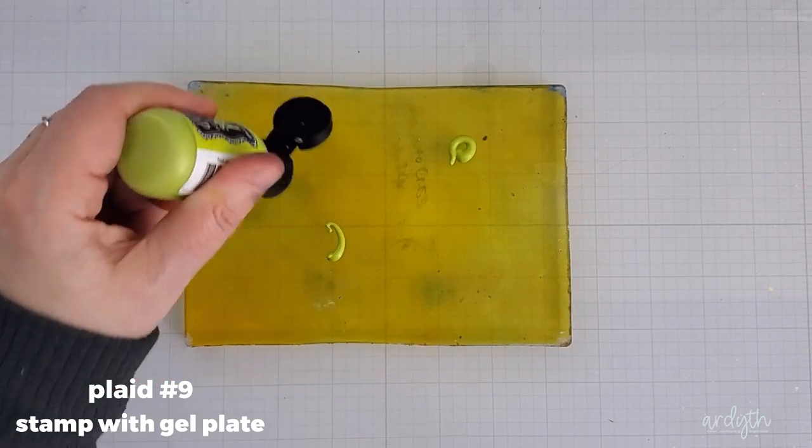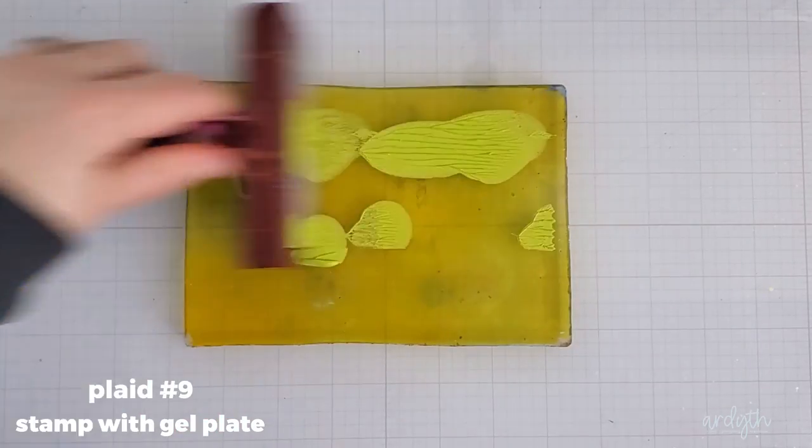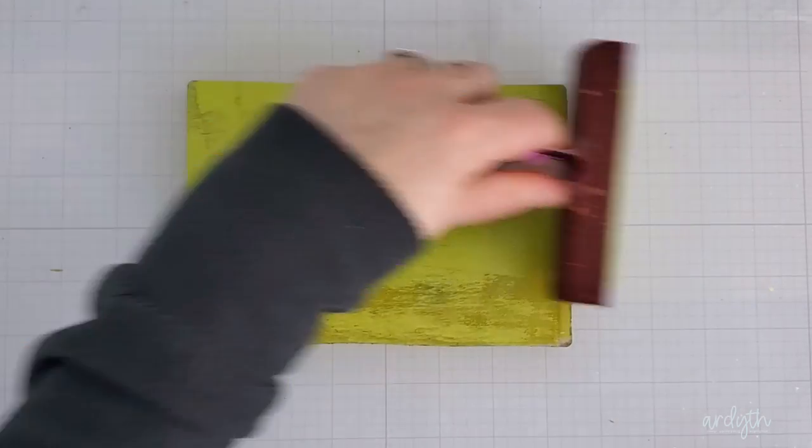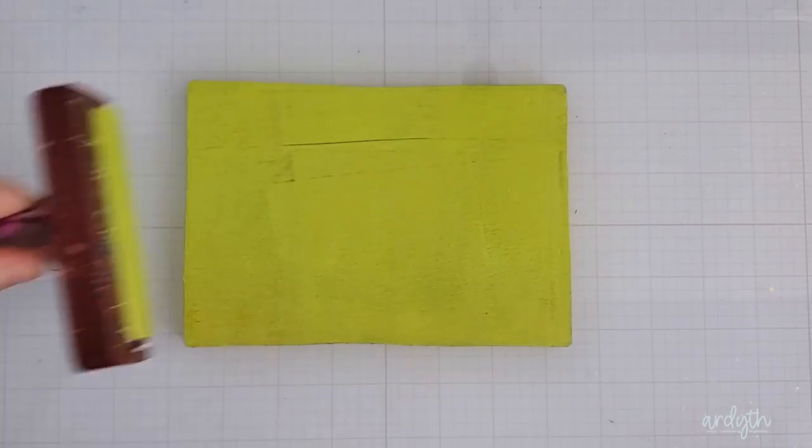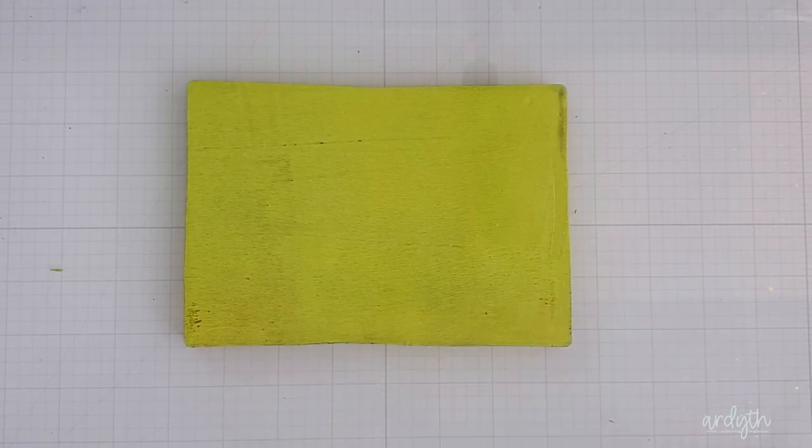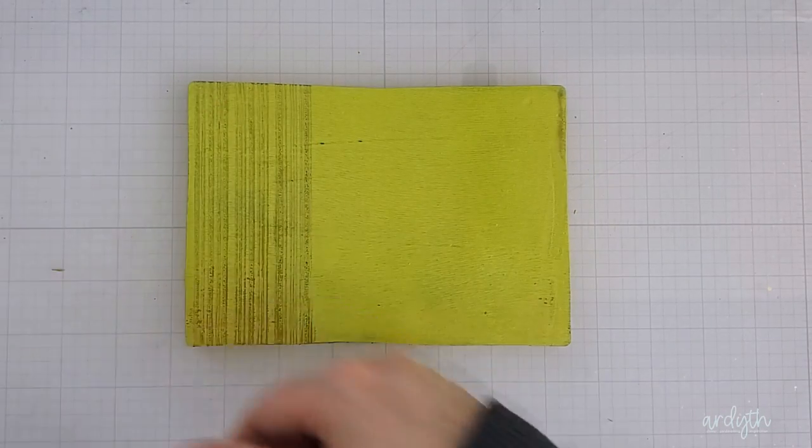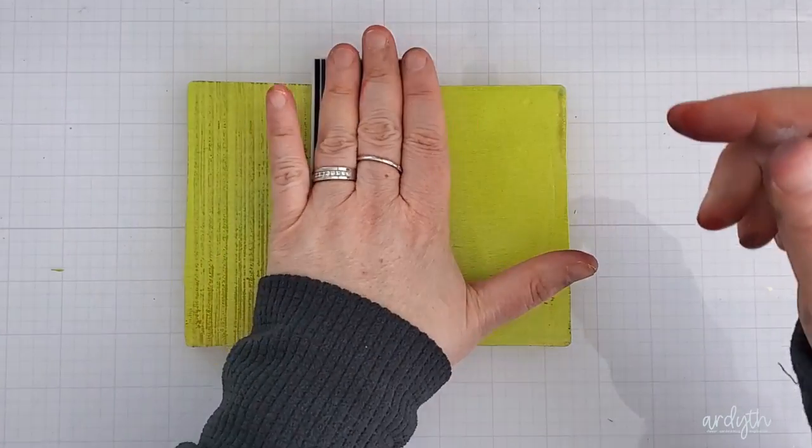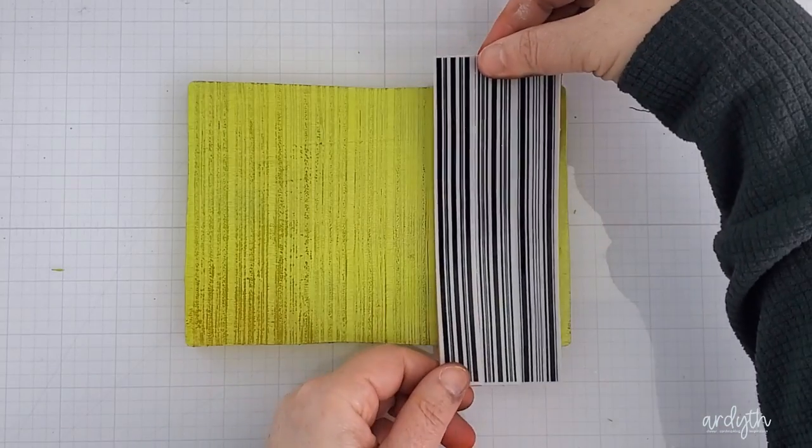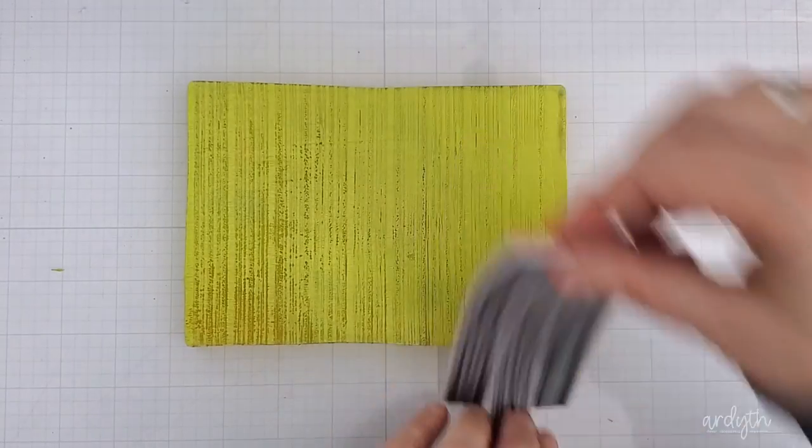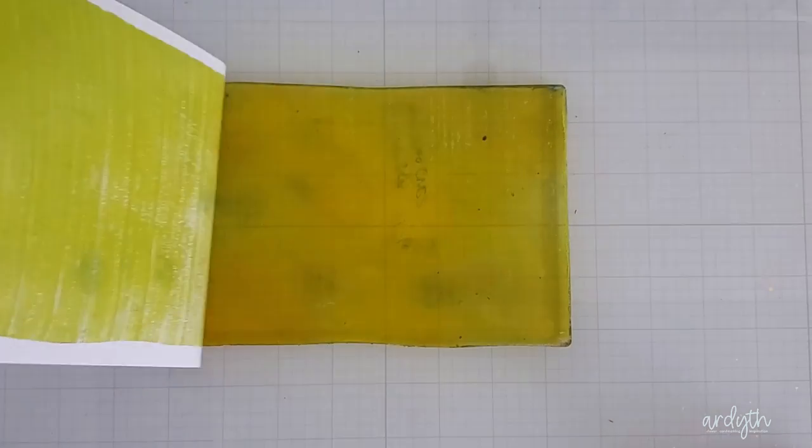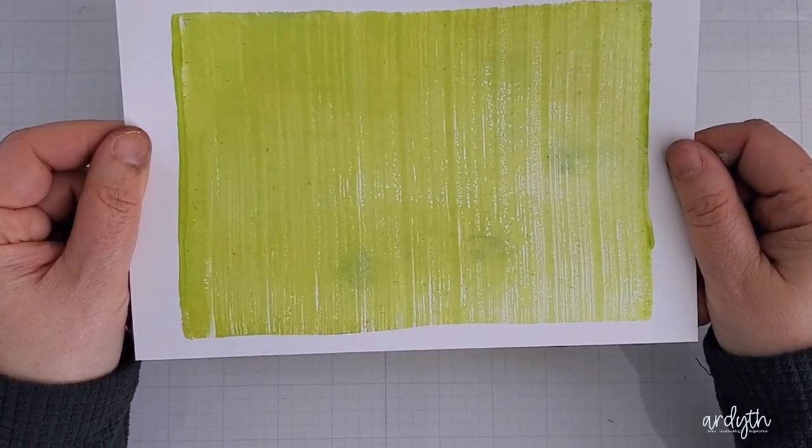Plaid number nine is another experiment using my gel press and another stamp. I started by putting a thin layer of lime shimmer paint on my gel plate and then I grabbed this pinstripe stamp from Simon Hurley. It's a pull-apart which gives you a lot of flexibility, and my plan is to create my plaid with two colors by removing the paint with a stamp like this.